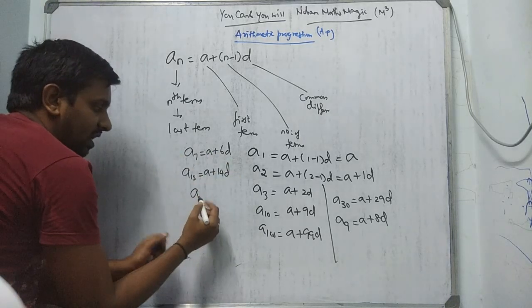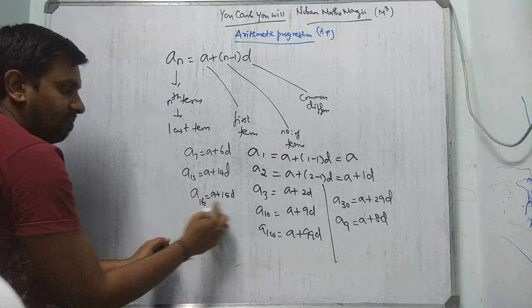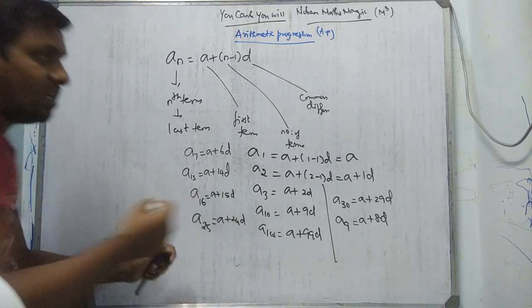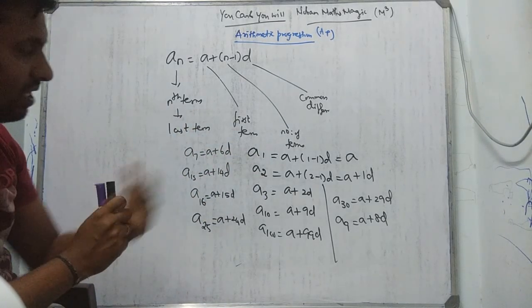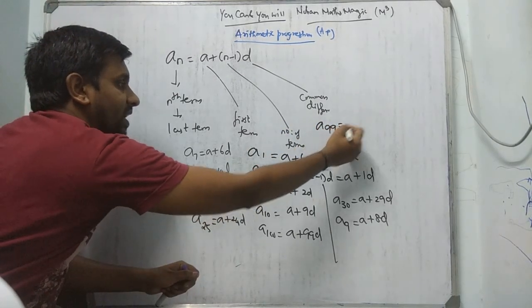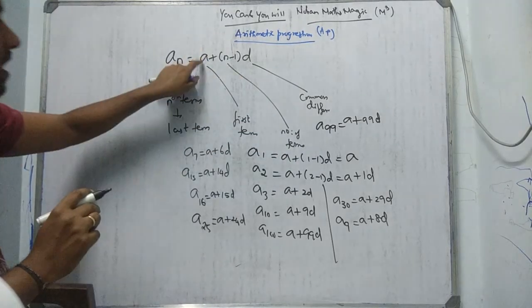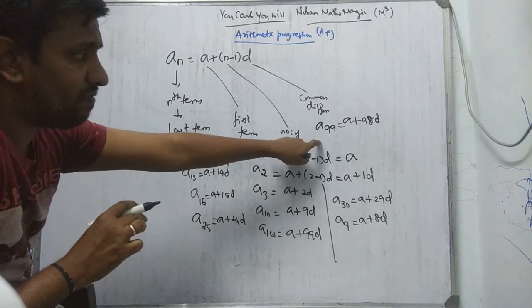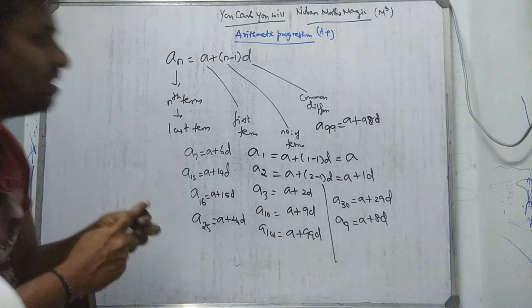You have to use these shortcuts. 16th term is A plus 15D — one must always be reduced. 25th term A25 is A plus 24D. You should be very clear: 10th term is A plus 9D, 11th term is A plus 10D. 99th term A99 is A plus 98D. A24 is A plus 23D. A7 is A plus 6D. A5 is A plus 4D.